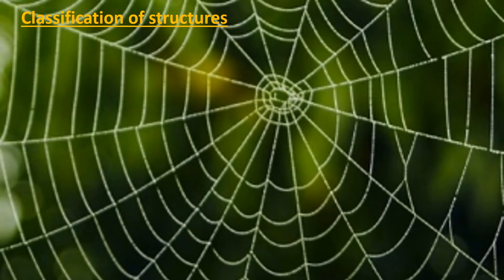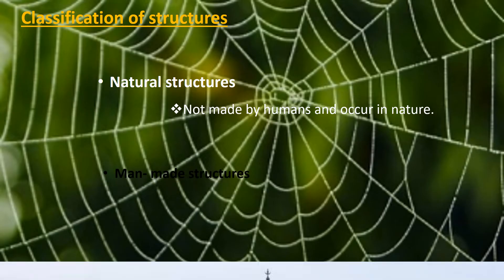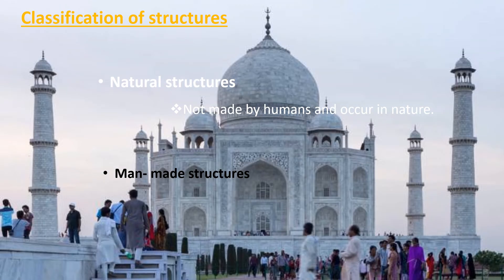Now we're going to have a look at the classification of structures. There are two different classifications. The first is a natural structure — structures that have not been made by people and that occur in nature. Then you get man-made structures, like the Taj Mahal building in India. People build or manufacture structures to help solve problems; these are called man-made structures.